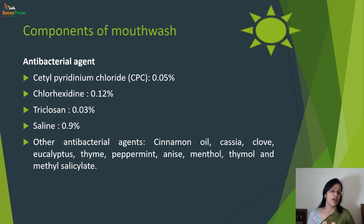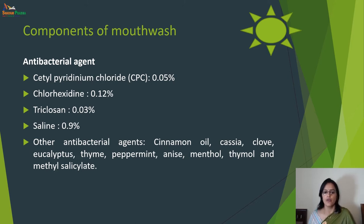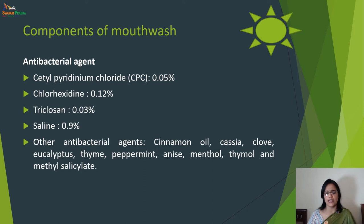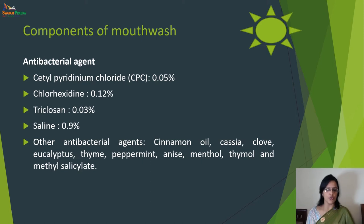Taking them one by one: antibacterial agents — cetylpyridinium chloride (CPC) is used in mouthwashes at concentrations from 0.5%; chlorhexidine; triclosan; saline; and other antibacterial agents such as cinnamon oil, acacia, clove, eucalyptus, thyme, peppermint, anise, menthol, thymol and methyl salicylate. These are the antibacterial agents used in mouthwash.